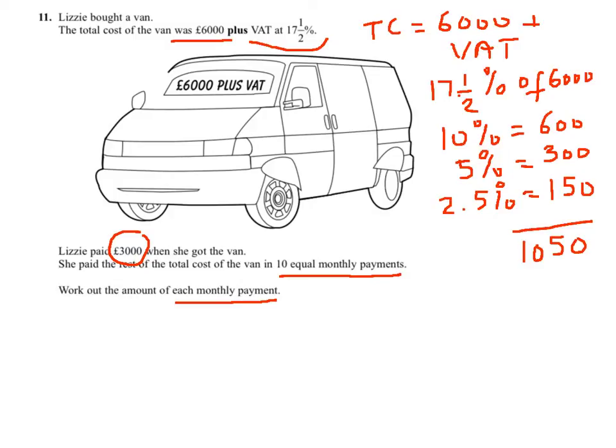Now, the total cost of the van is the £6,000 plus the VAT which is £1,050. That brings it up to £7,050.